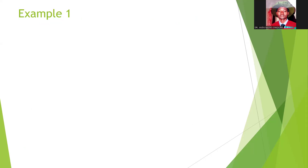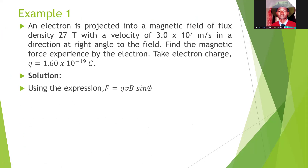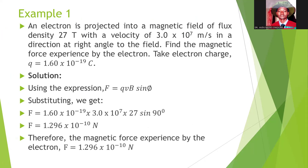Let's look at an example. In this example, we are to calculate the magnetic force experienced by an electron. Using the expression and substituting, we get that the magnetic force experienced by the electron in the magnetic field is equal to 1.296 times 10 raised to the power minus 10 newtons.